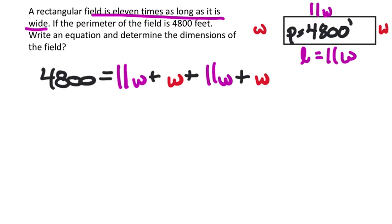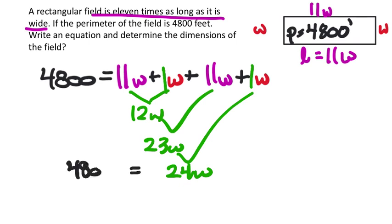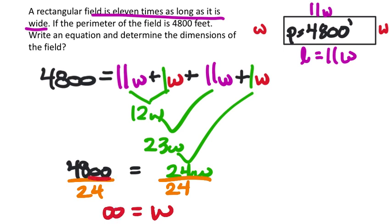Combining like terms: 11w + w = 12w, plus another 11w = 23w, plus another w = 24w. So 24w = 4,800. Dividing both sides by 24: I can cancel the two zeros, leaving 48 ÷ 24 = 2. So the width is 200 feet.